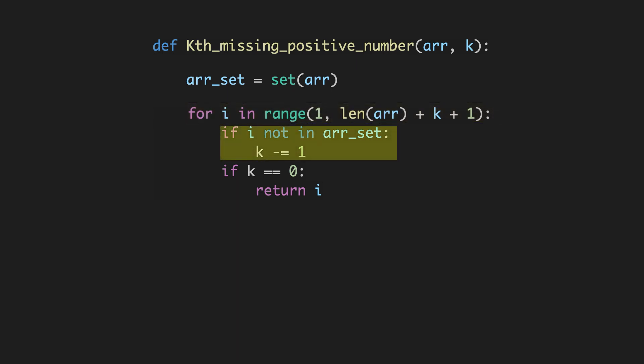If i is not in the set, that means we have found the missing number and so we'll reduce k by 1. If k is equal to 0, we have found our kth positive integer and we'll return i from the function. If n is the number of elements in the array, the time complexity will be O(n + k). The space complexity of this approach is O(n) for the additional set that we create.